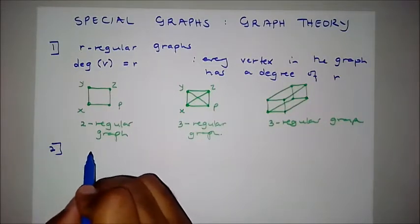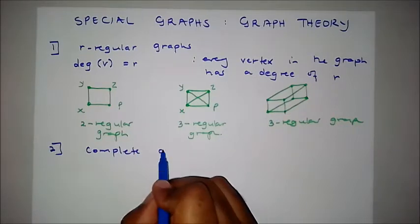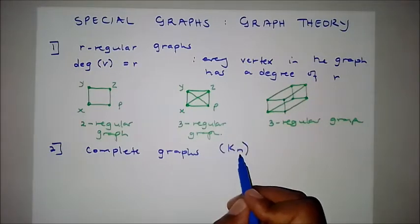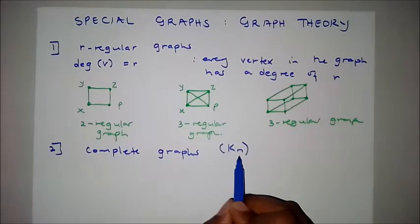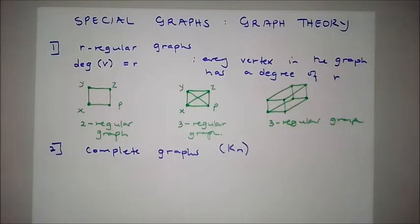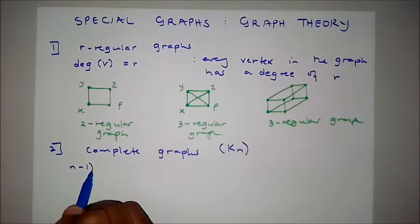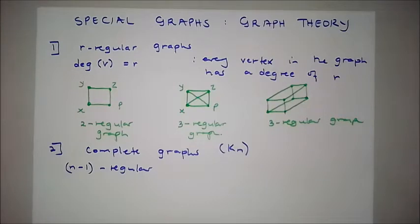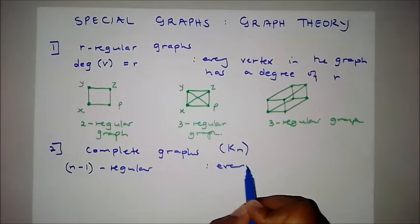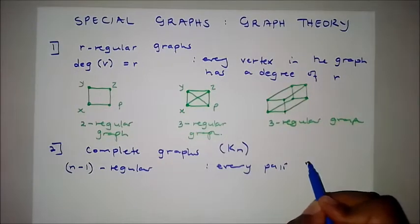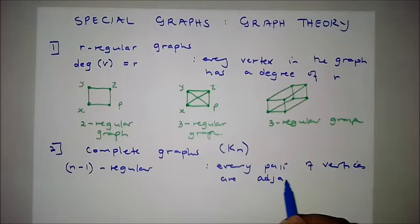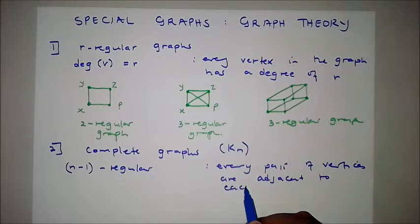Secondly, we've got graphs called complete graphs, represented by Kn, where n is the number of vertices the graph has — not the degree, but the number of vertices. This graph is n-minus-1 regular. Complete graphs have the property that every pair of vertices is adjacent to each other.